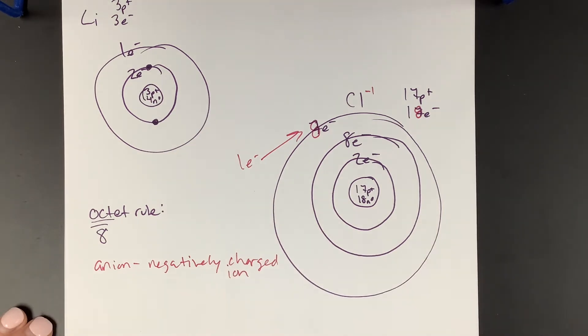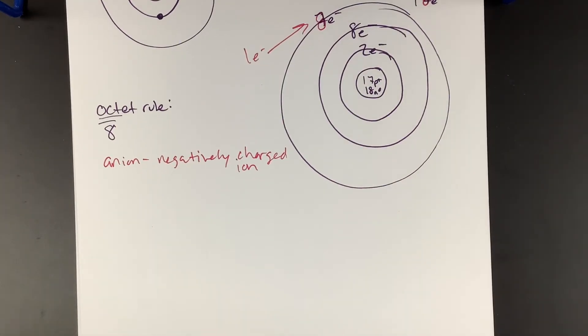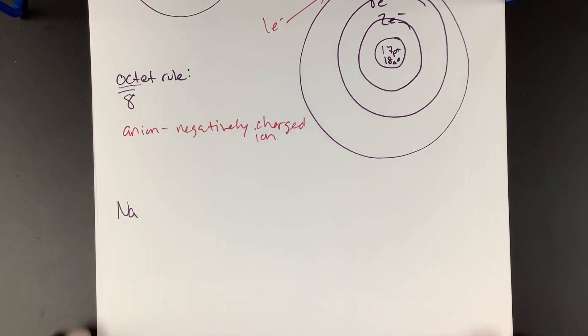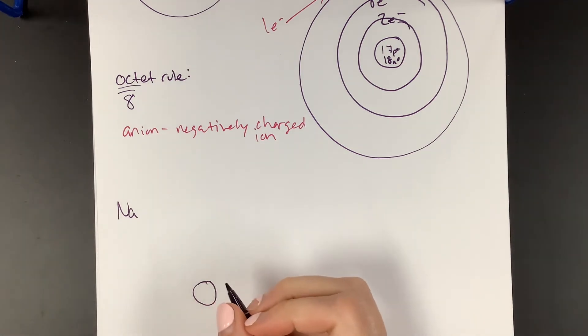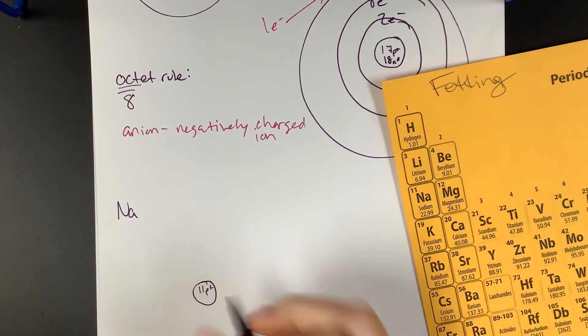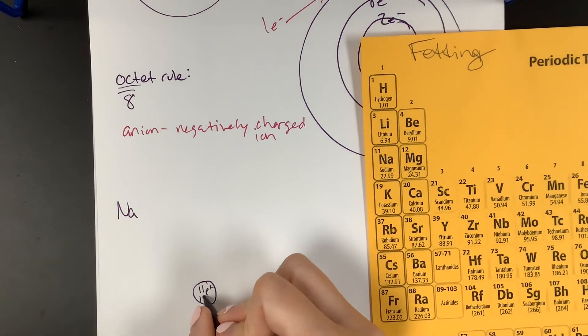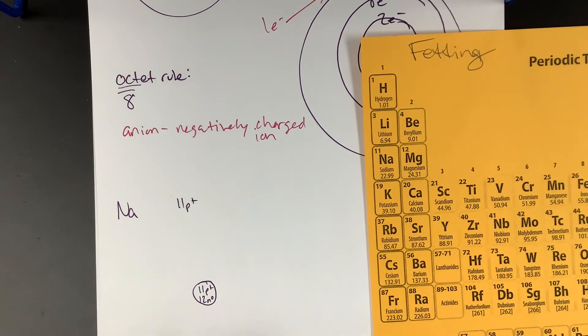It's an ion. We're going to actually do one more together. Let's do sodium. Yeah. Okay, sodium. What's in the nucleus? Sodium's right there. Atomic number 11, so it has 11 protons. How many neutrons? 23 minus 11 is 12. So it has 11 protons. How many electrons does it have in a neutral atom? 11.